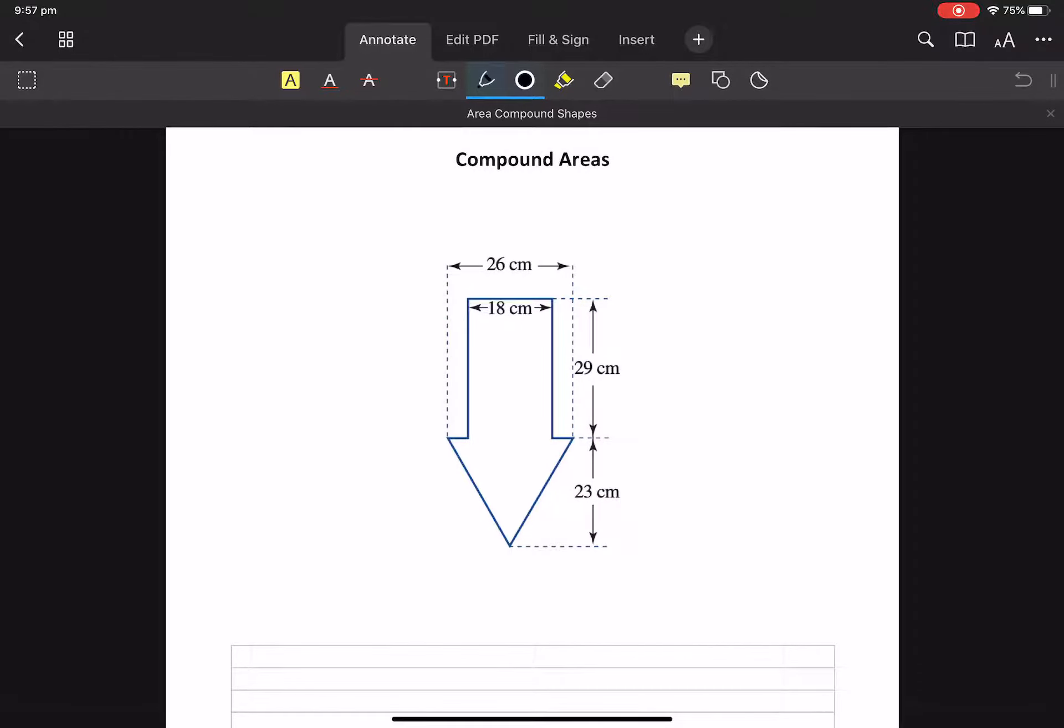So we're going to find the area of that arrow. Can you see that there is a triangle? And we're just going to split them up into shapes that we know of because I don't have a formula for the area of an arrowhead, but I certainly do have an area of a rectangle.